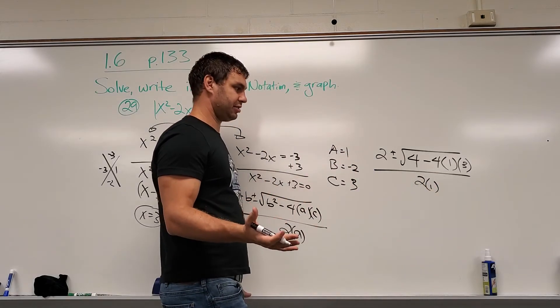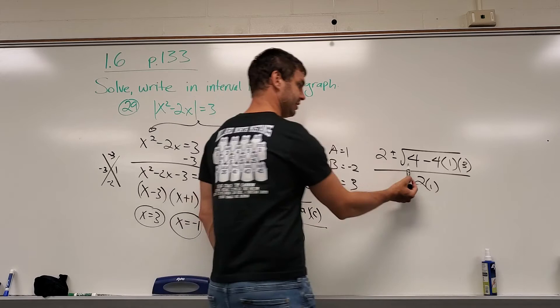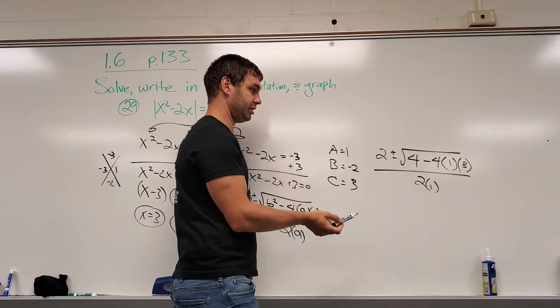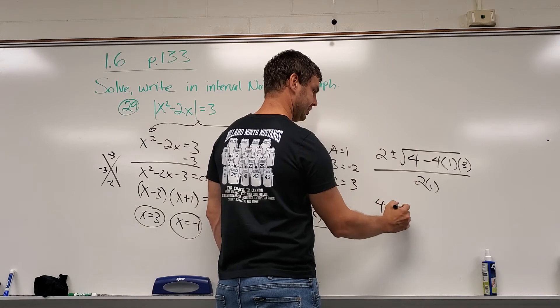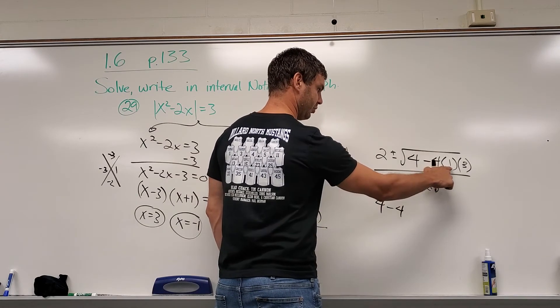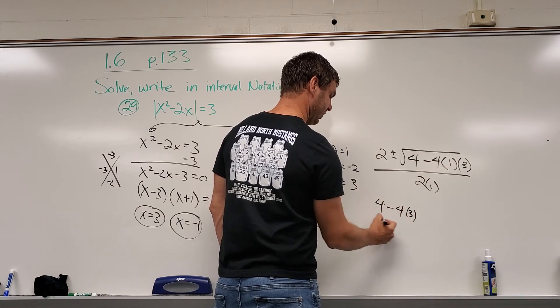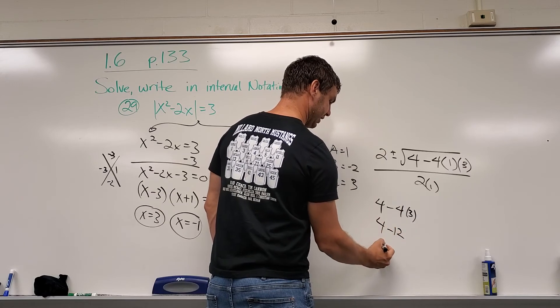Now, a quick way to check is to check the discriminant. If this is negative, then there's no solution. Let's just double-check that. We're going to end up with 4 minus 4 times 1 times 3, or 4 times 3. That's 4 minus 12, which turns out to be negative 8.